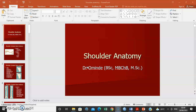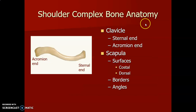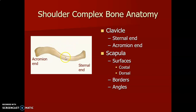The shoulder is a complex joint with bones of complex anatomy. The clavicle is the only horizontally lying long bone. It's a subcutaneous bone that has two surfaces, costal and dorsal, and also has borders and angles.